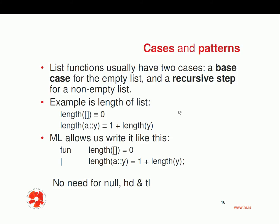The last thing we want to discuss in this first part of our discussion on functional programming in ML is what is called cases and patterns. As we discussed earlier, list functions usually have two cases: a base case for the empty list and a recursive step for the non-empty list.